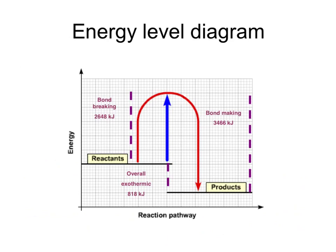We can show this on an energy level diagram. The reactants have a certain amount of energy locked up in their bonds, and the products have a certain amount locked up in their bonds. In order for the reaction to take place — shown by the red curve — we need to put in 2,648 kilojoules to break the existing bonds. Once broken into individual atoms, energy is released making the new bonds: 3,466 kilojoules, and the difference is 818 kilojoules. Because that is given out, it's an overall exothermic reaction. Incidentally, this energy hump is the activation energy — the energy required for a successful collision, which we looked at when we covered rates of reaction earlier in C3.